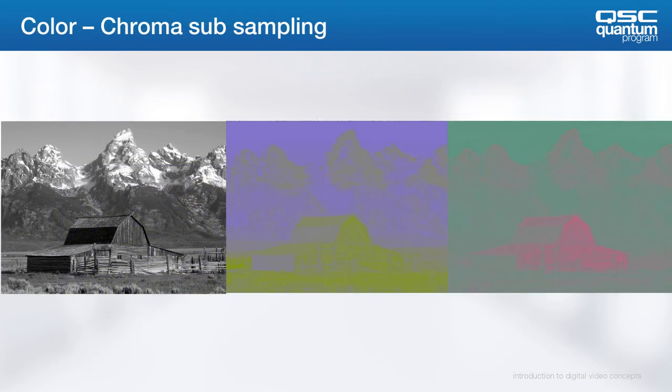Digital subsampling is frequently used when transmitting or saving digital data. The human visual system is much more sensitive to brightness than it is to color. When a video signal is separated into luma and chrominance components, the luma portion can be transmitted at high-resolution bandwidth. However, the chrominance portion can be subsampled to reduce bandwidth requirements.